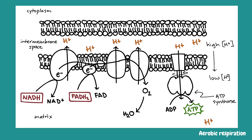Second is electron transfer and proton pumping. As electrons are passed down the chain, they move from a higher to a lower energy level, releasing energy. Some of this energy is used to pump hydrogen ions out of the matrix and into the intermembrane space, establishing an electrochemical gradient. Third is the splitting of oxygen to form water: at the end of the electron transport chain, electrons are transferred to molecular oxygen, which splits and takes up hydrogen ions to form water. Lastly, hydrogen ions flow down their gradient back into the matrix through an enzyme called ATP synthase, which harnesses the flow of protons to synthesize ATP.